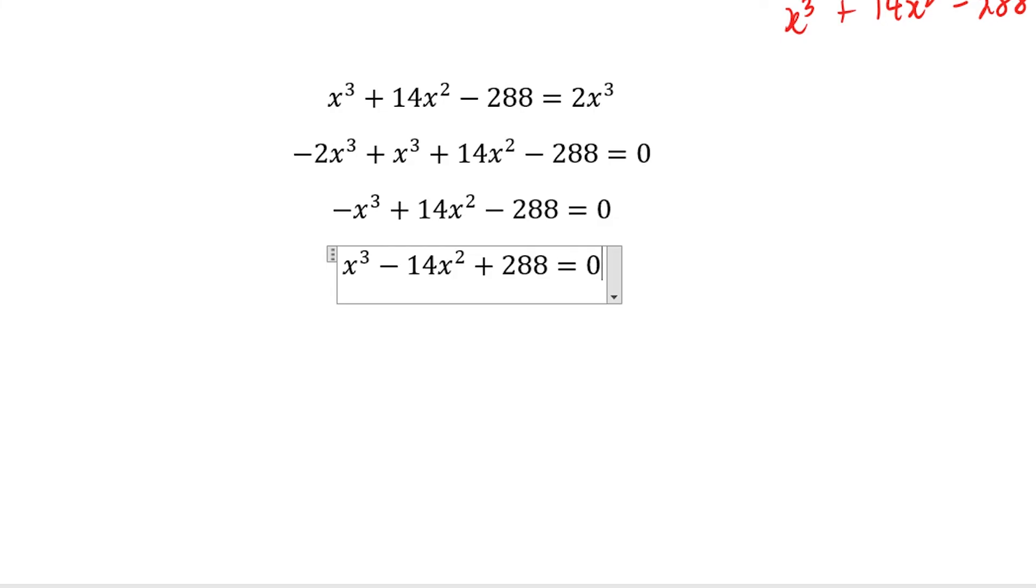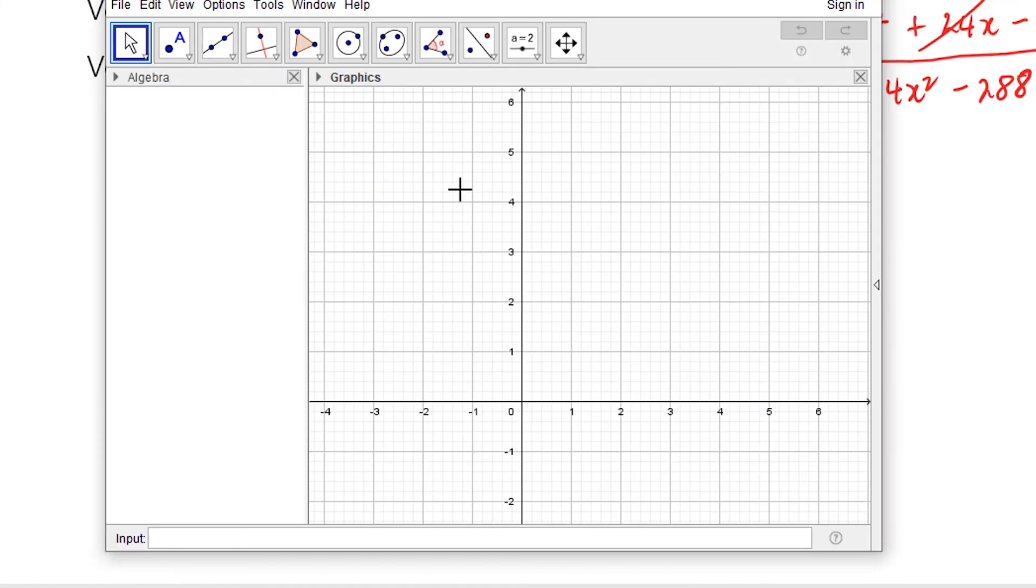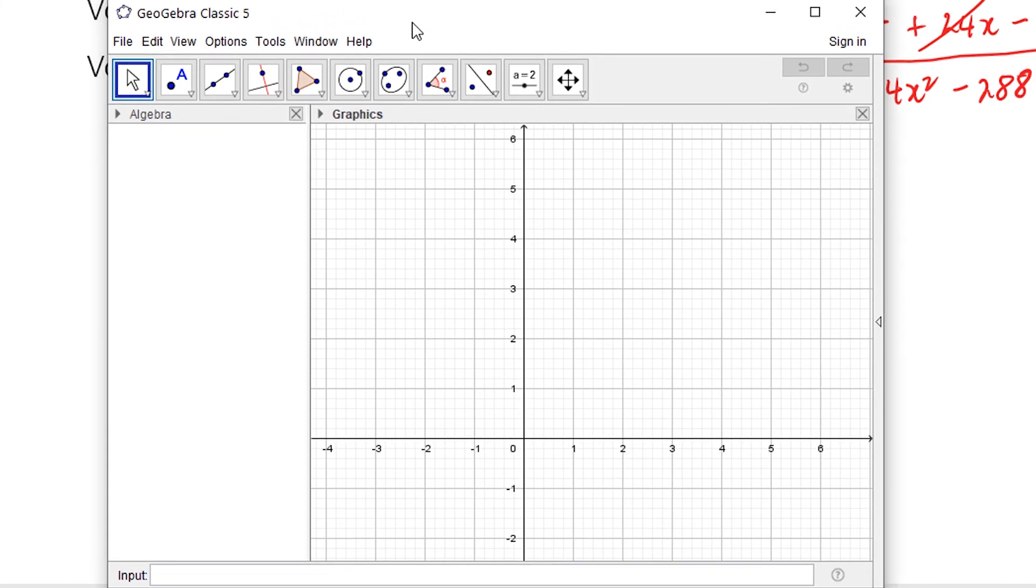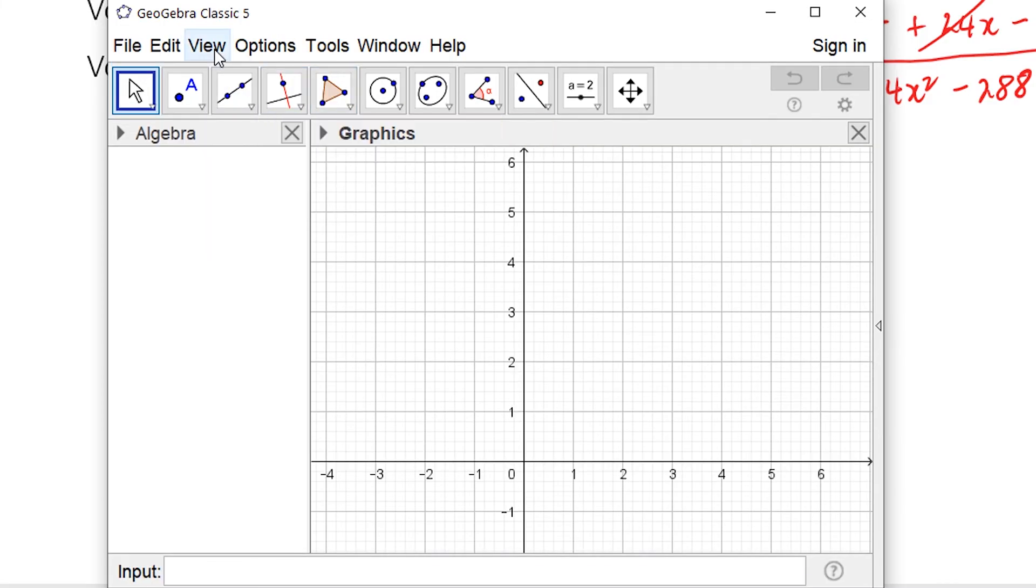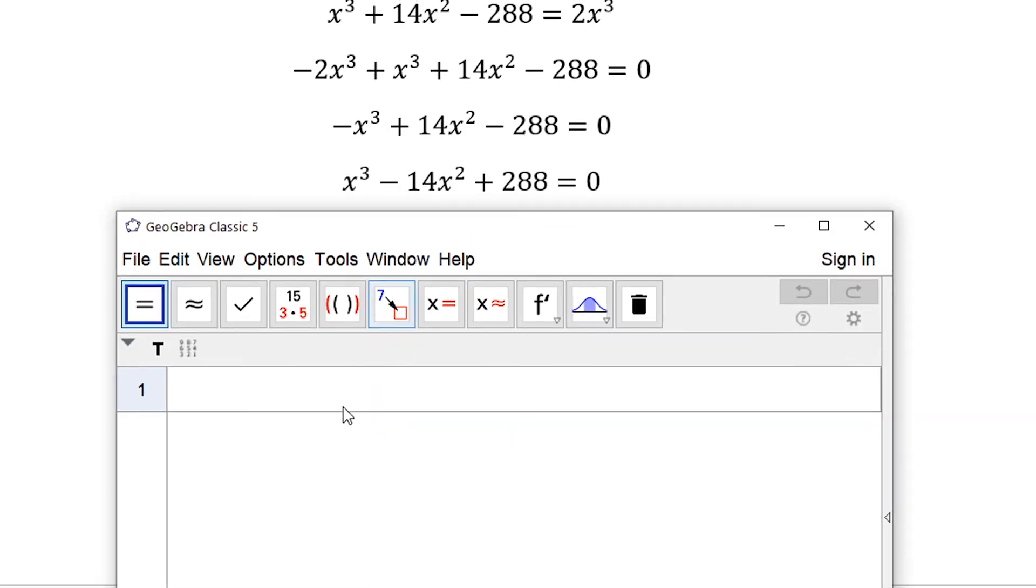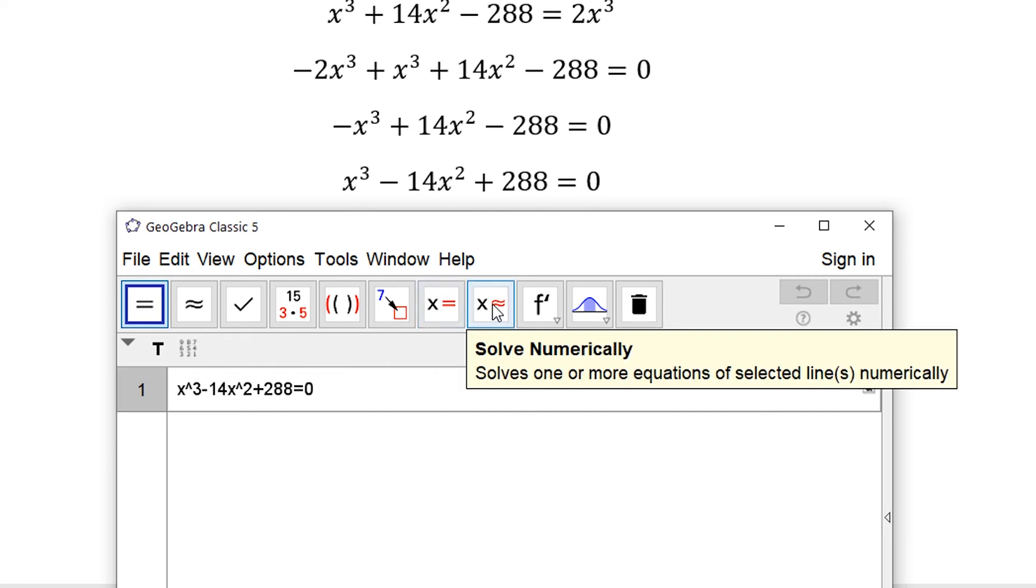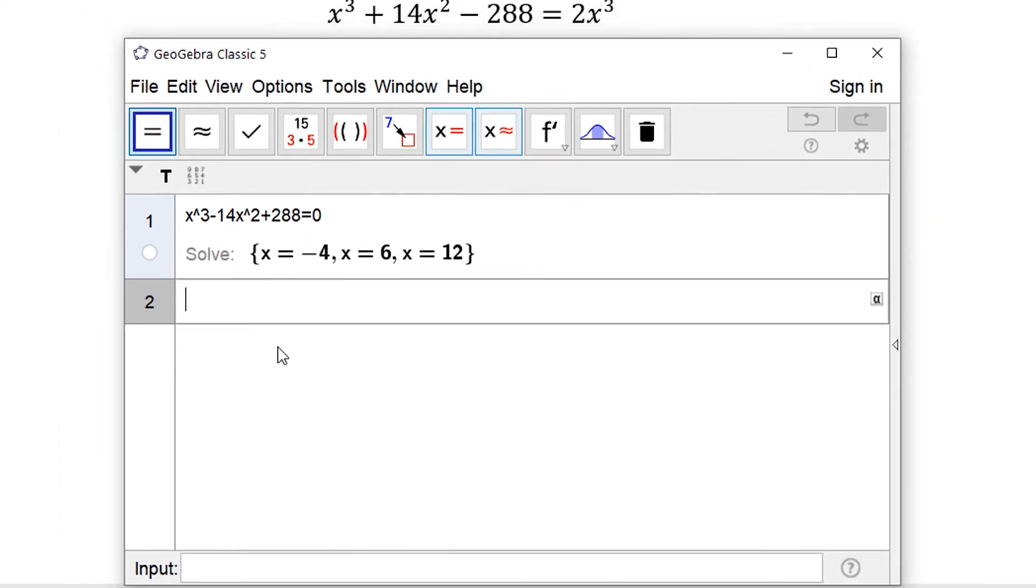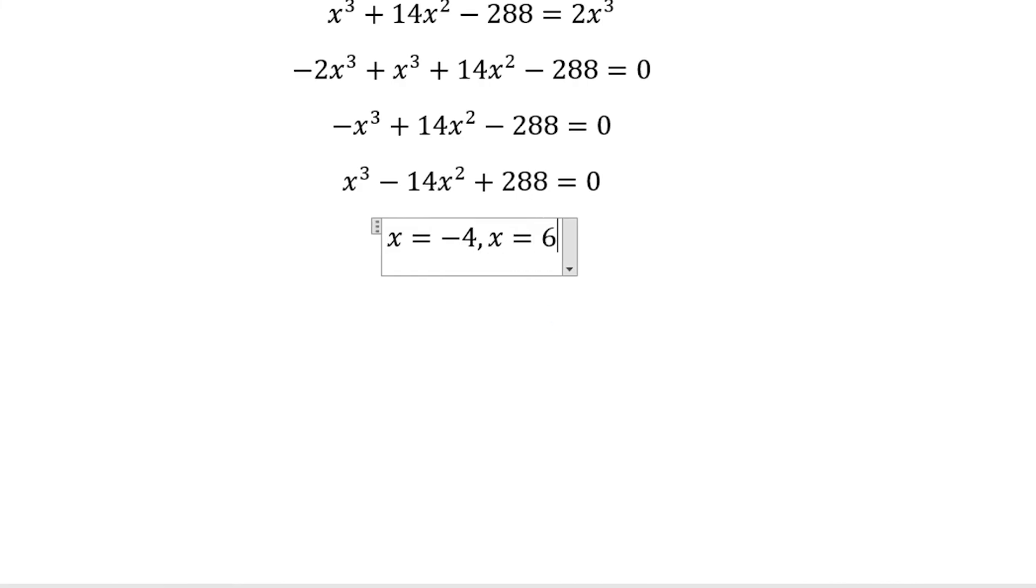GeoGebra can solve polynomial equations. For this case, we will be using GeoGebra in solving for the values of x. When you go to view, just activate CAS. CAS stands for Computer Algebra System. In this view, you can evaluate, you can factor, you can expand, you can solve for the values of x. For this case, all you have to do is plug in our equation. Let's key in our equation here. We have x cubed minus 14x squared plus 288 is equal to 0. There is our equation. So let's just click this. The values of x are minus 4, positive 6, and 12. So x equals minus 4, 6, and 12. x equals minus 4, x equals 6, and x equals 12.